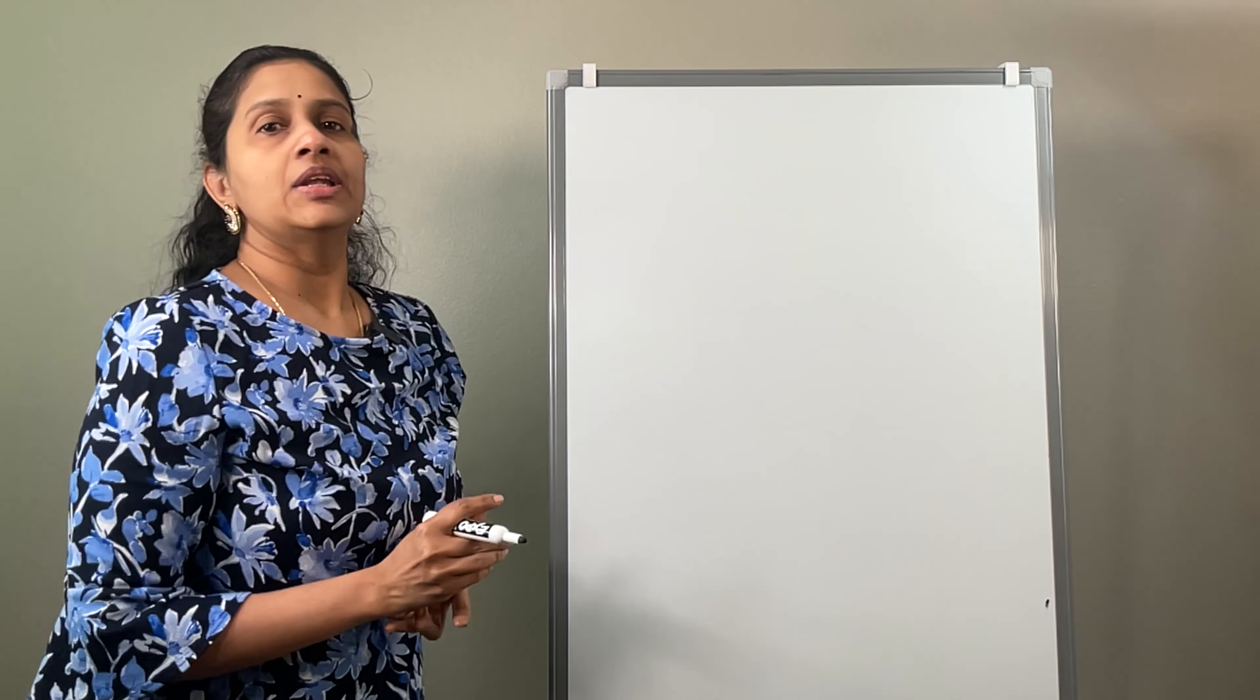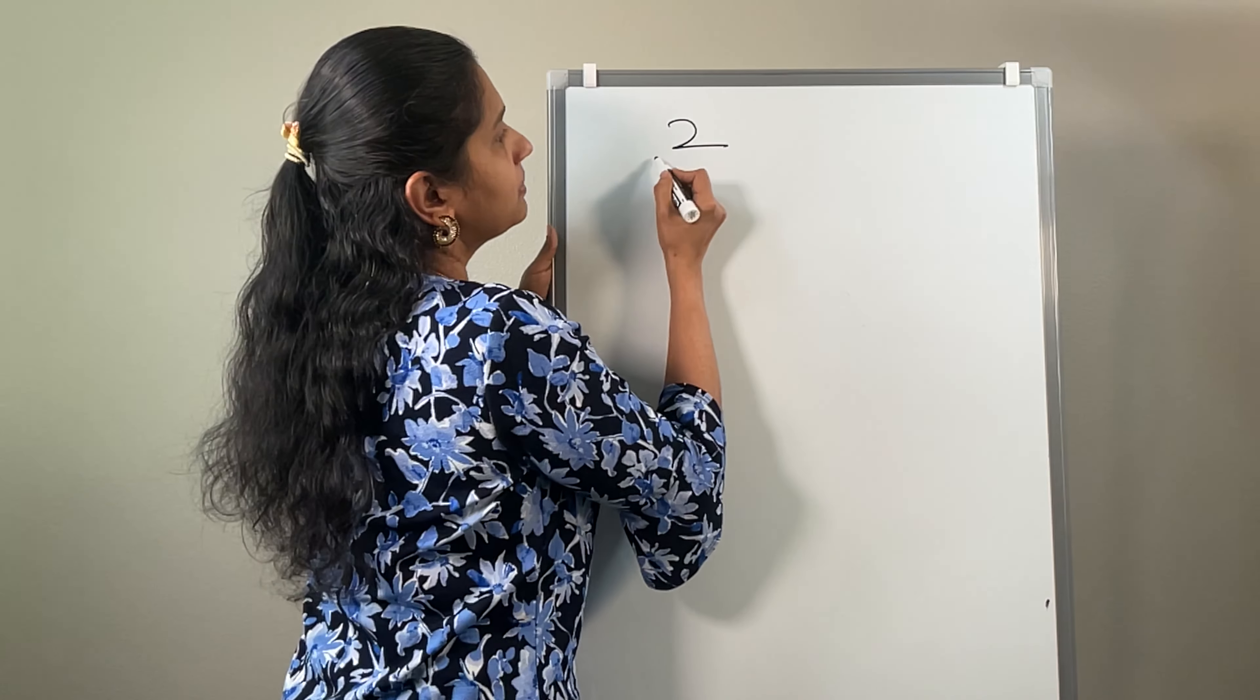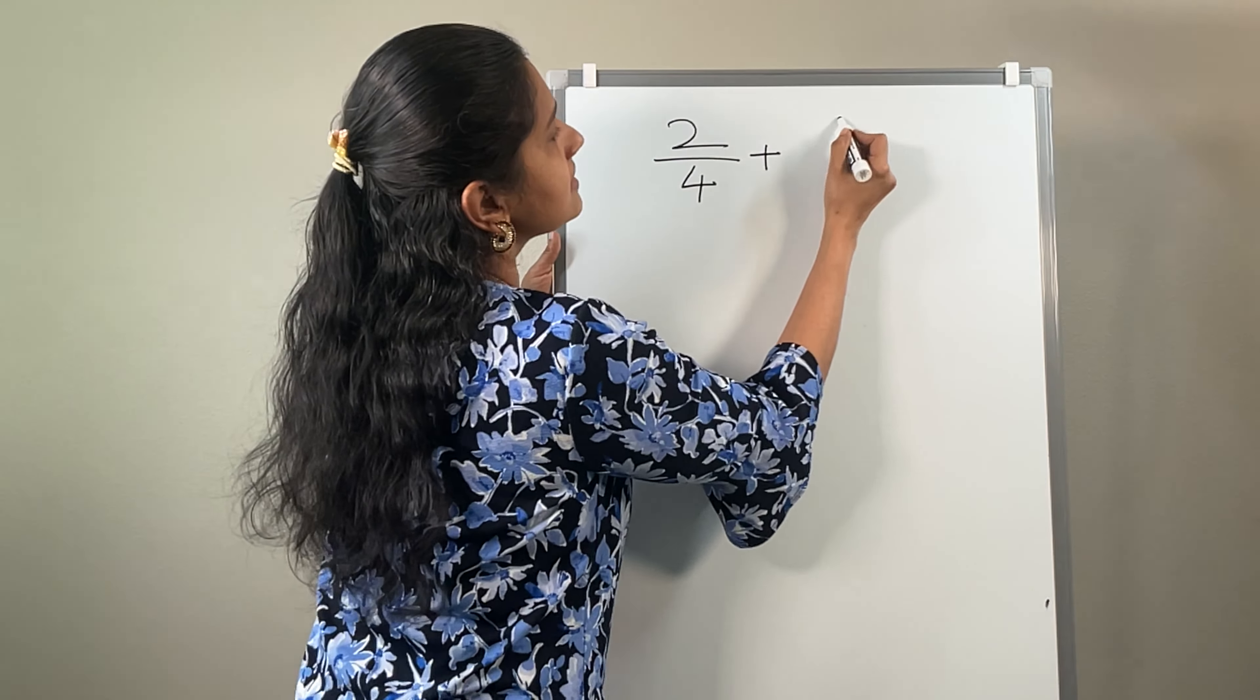Now, consider another type of example where you are getting something like 2 by 4 plus 6 by 4. In this case, what you need to do is simply add the numerators: 2 plus 6 by put the common denominator 4. What is 6 plus 2? 8. 8 by 4. What is 8 divided by 4? That is equal to 2.